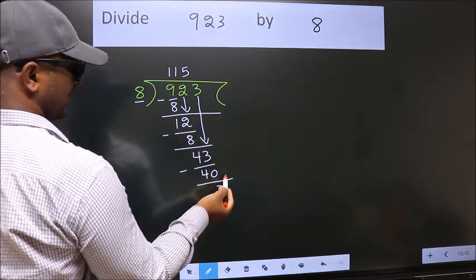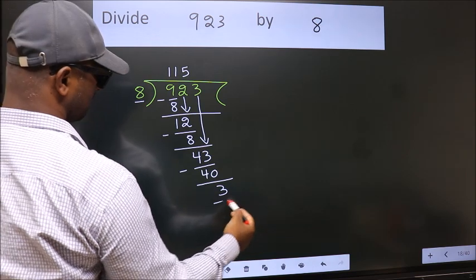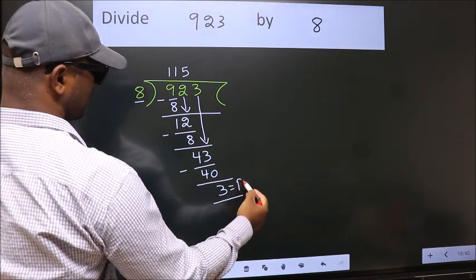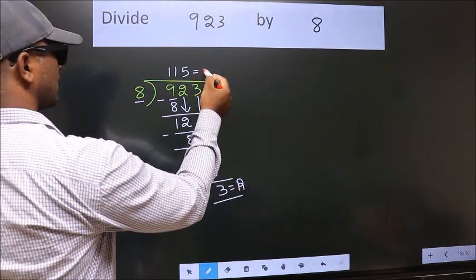No more numbers to bring it down. So, we stop here. This is our remainder. This is our quotient.